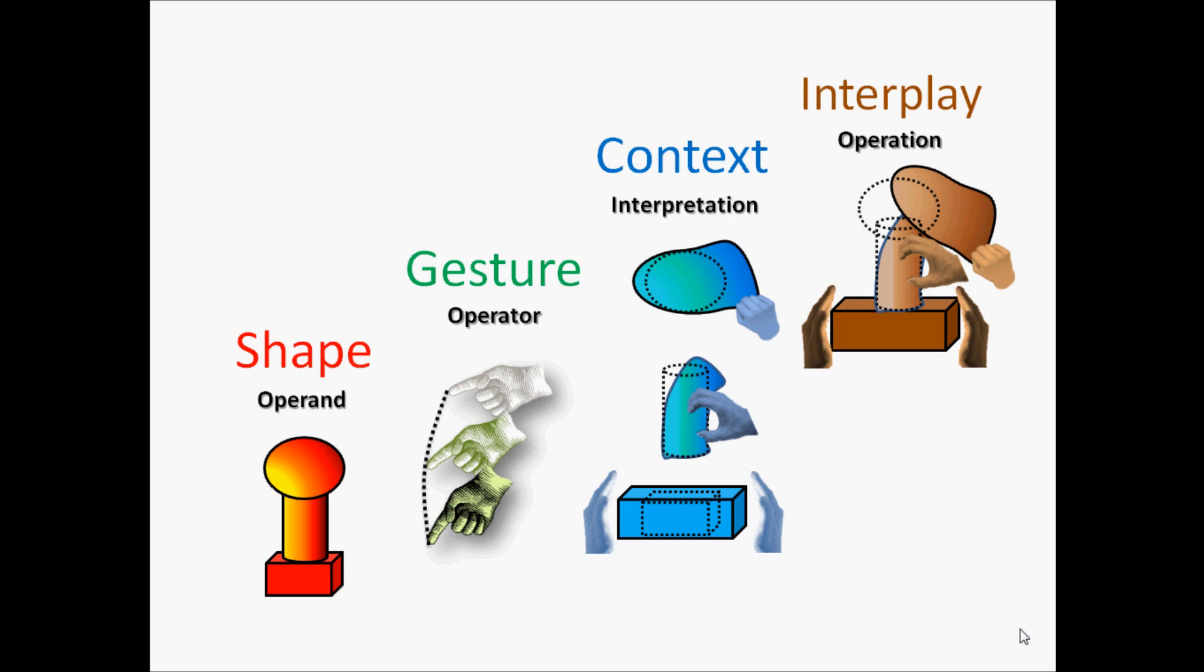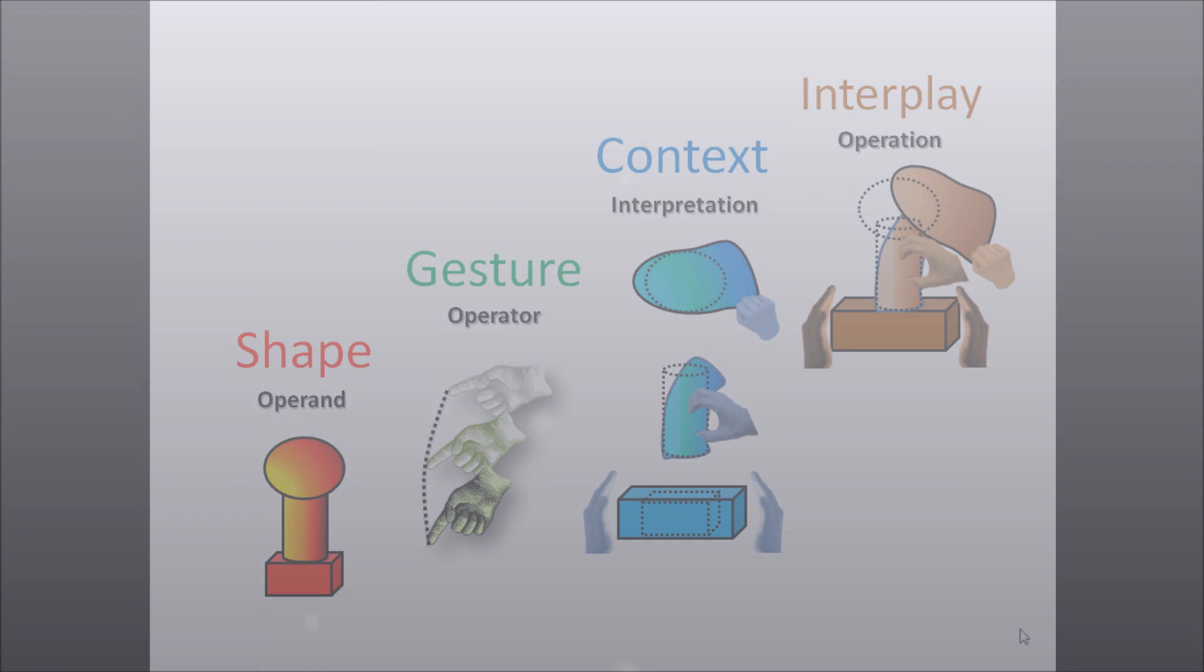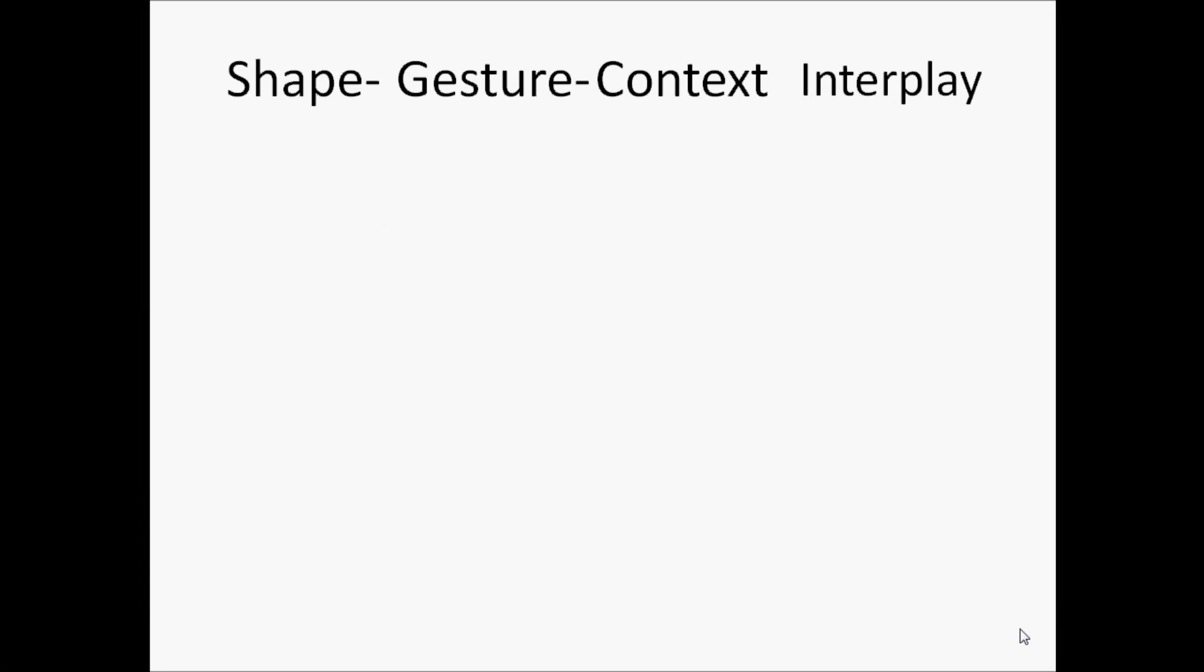At the heart of our system is a novel interaction paradigm called shape-gesture-context interplay, which allows for the interpretation of human gestures and spatial context such as proximity to automatically deduce the design intent of the user. In our system, shapes represent objects of interest or operands.